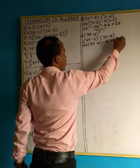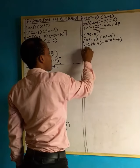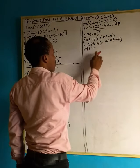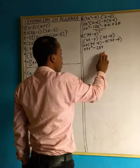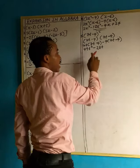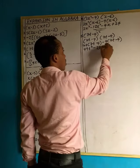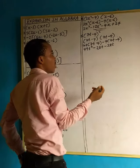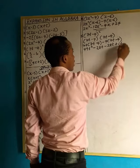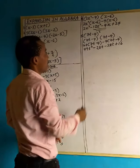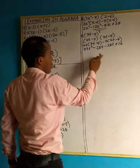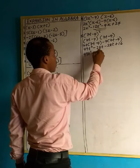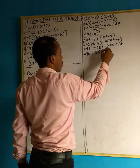7t into bracket 7t minus 4, minus 4 into bracket 7t minus 4. 7t multiplied by 7t gives us 49t squared. 7t multiplied by minus 4 gives us minus 28t. Then minus 4 multiplied by 7t gives us minus 28t as well. Minus 4 multiplied by minus 4 — they are both negative, so it becomes positive — giving us plus 16. Now, minus 28t minus 28t: minus minus is plus, so adding gives us 56t, and we attach the negative. So we have 49t squared minus 56t plus 16. This is our final answer.